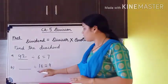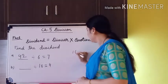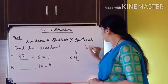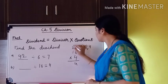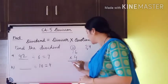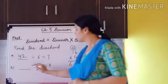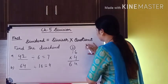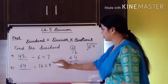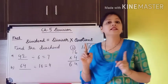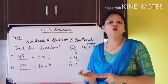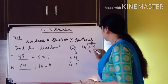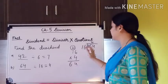The second example: divisor is 16 and quotient is 4. We multiply 4 times 16 — 4 sixes are 24, write 4 carry 2; 4 ones are 4 plus 2 equals 6. So the dividend is 64. To verify: 64 divided by 16 — 16 ones are 16, 16 twos are 32, 16 threes are 48, 16 fours are 64. We get the correct answer.